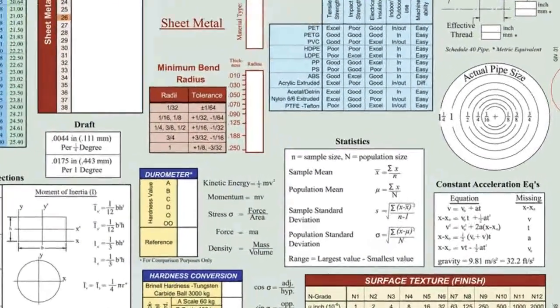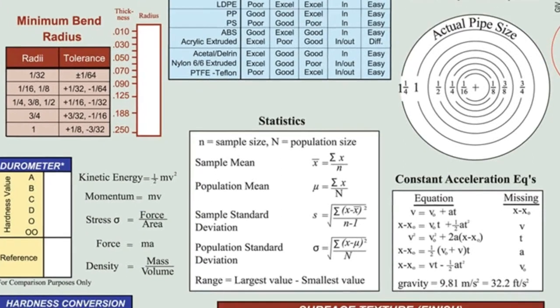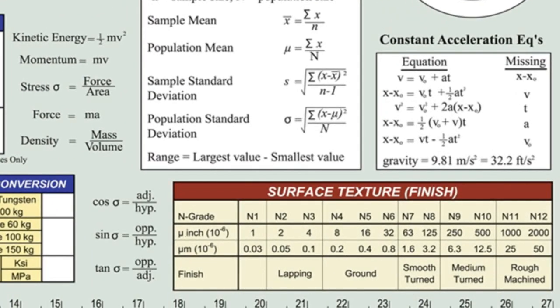In the lower right, you'll see tables showing constant acceleration formulas and basic statistic formulas. Below those is a conversion table for different surface finishes or surface texture call outs, and the machine operation required to achieve each finish.